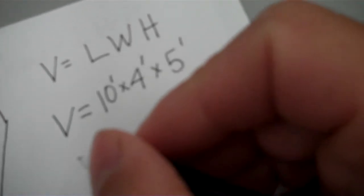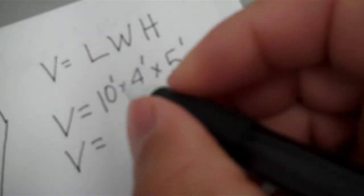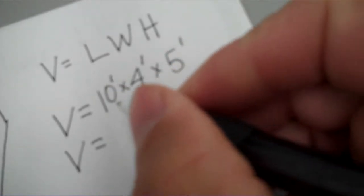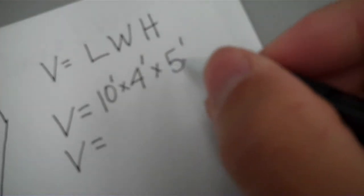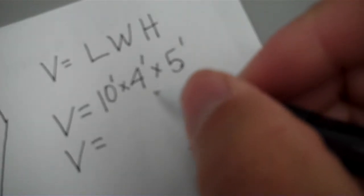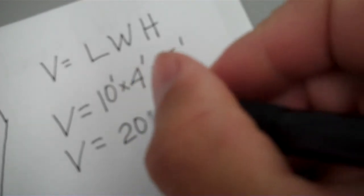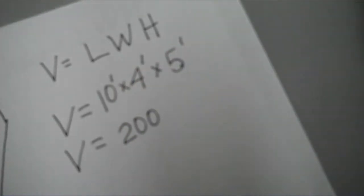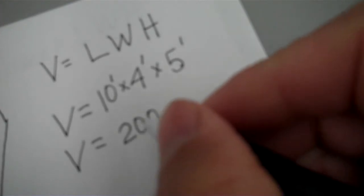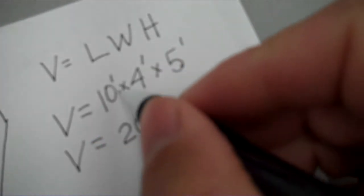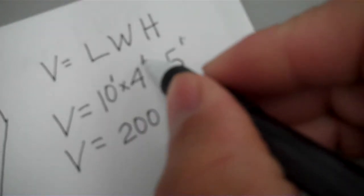So I just simply come down here to my last row and I take and I multiply these figures up. Four times five of course is 20, and then 20 times 10 is 200. So you get 200, but remember don't forget your units, so it would be 200.